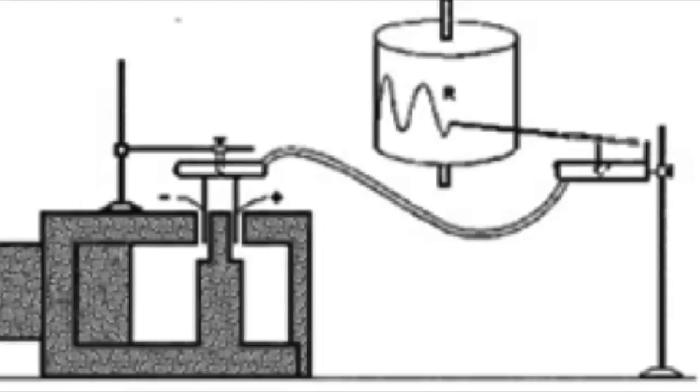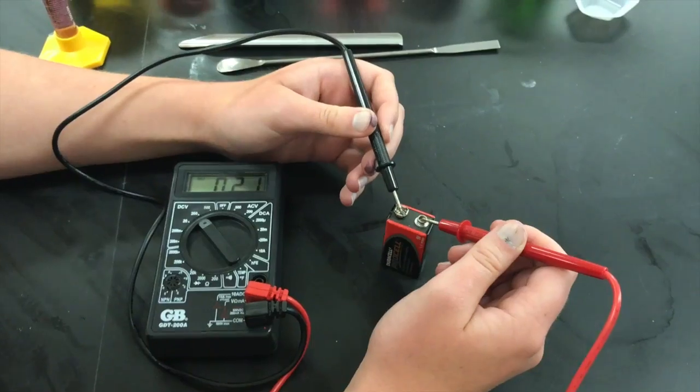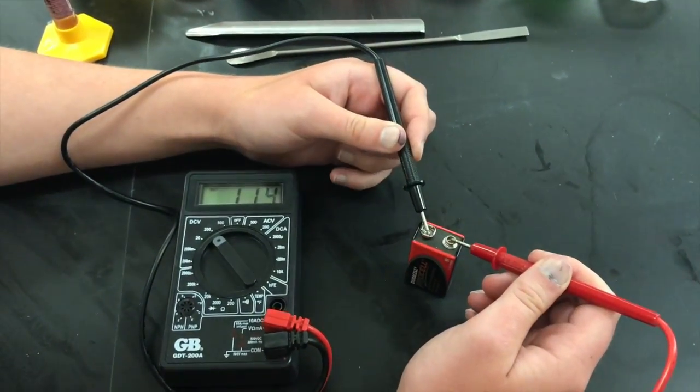Jacques-Arsène d'Arsonval then applied this concept by measuring voltage, connecting a pointer to moving coils that shift as the magnetic field increases or decreases.